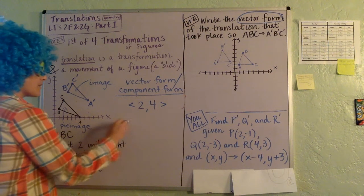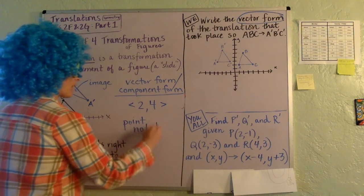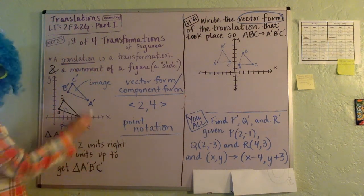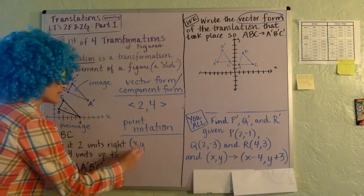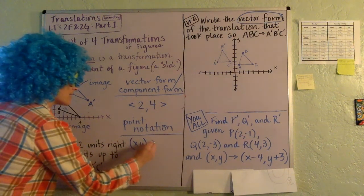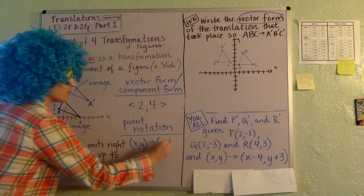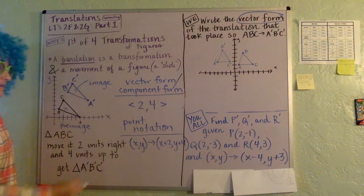We also sometimes use something called point notation, okay? And to use point notation for what we just did on these two figures, we go like this. We say, well, we started out with some coordinates, and then we slid them such that we added two to all the X's, and we added four to all the Y's.